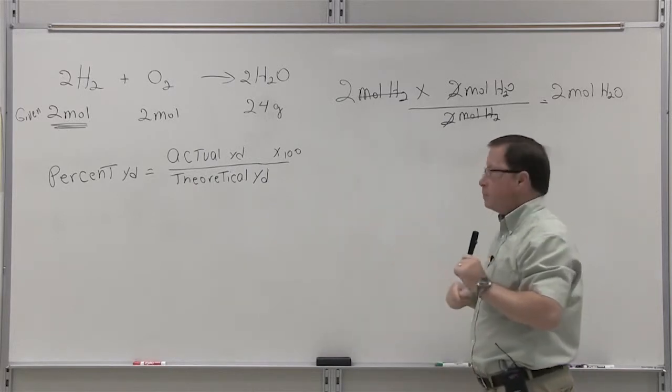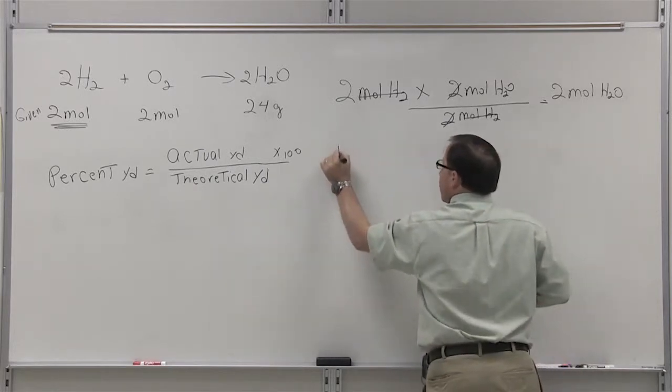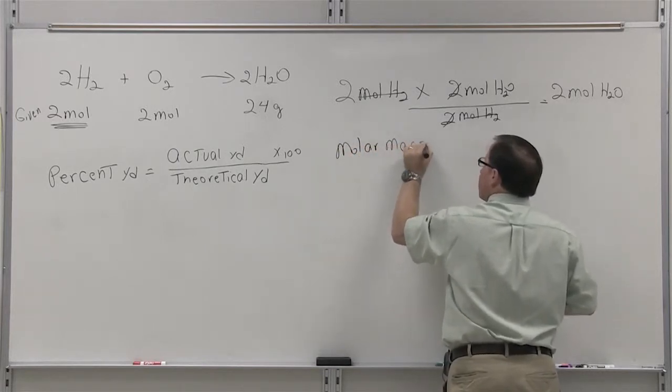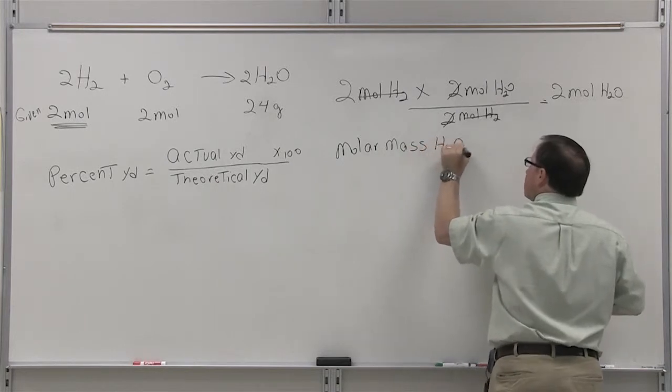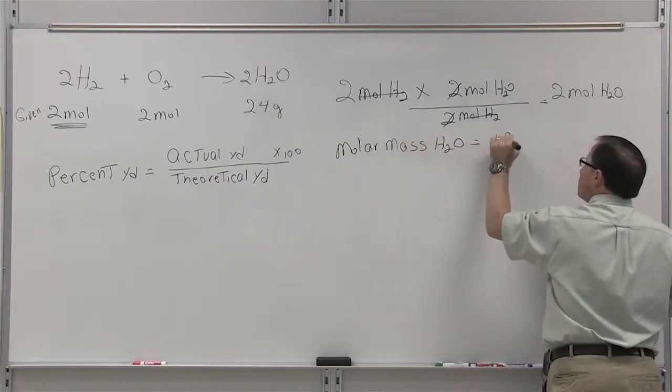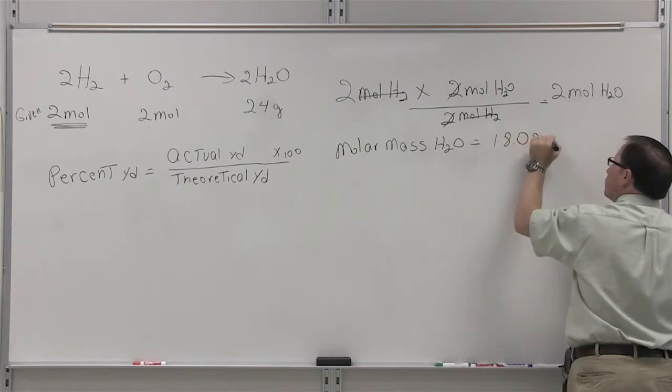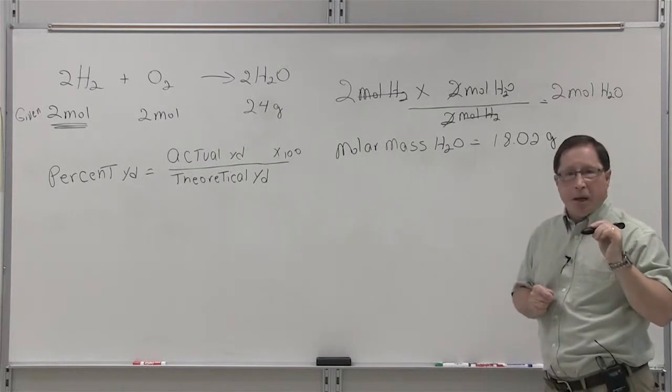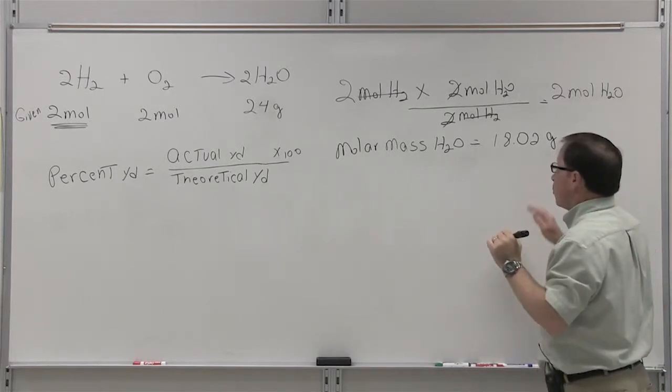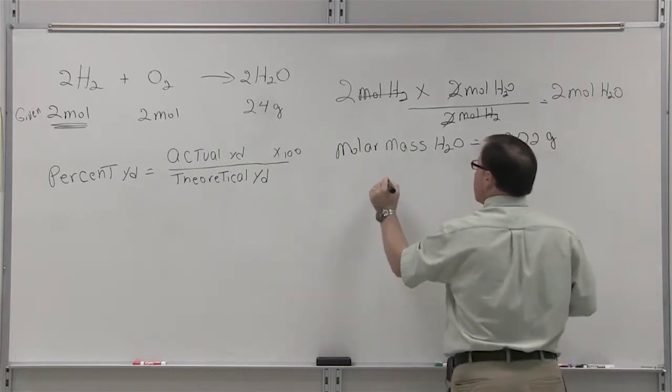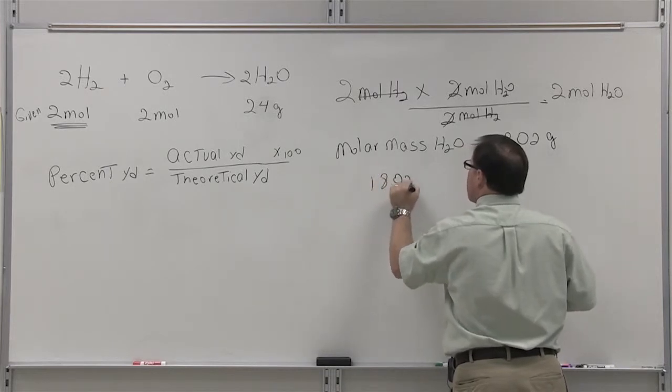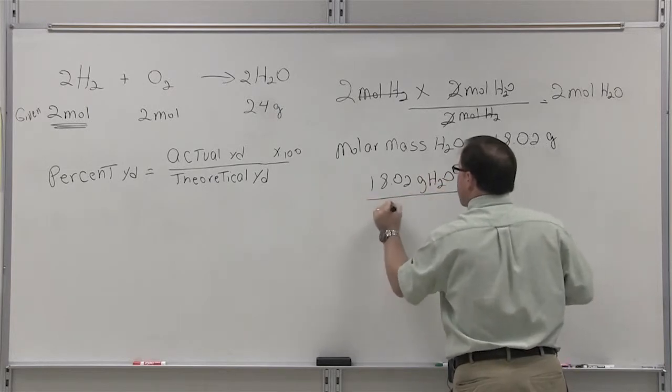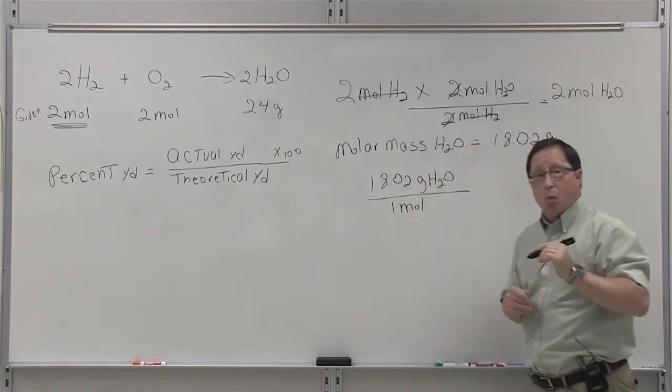For water, the molar mass of water is equal to 18.02 grams. We can set this up as a ratio and we can say that there are 18.02 grams of water in one mole.